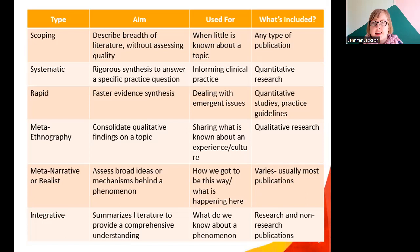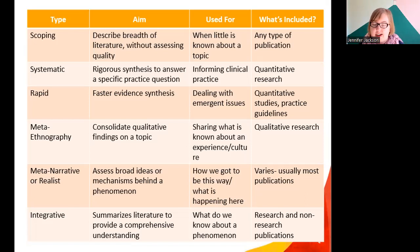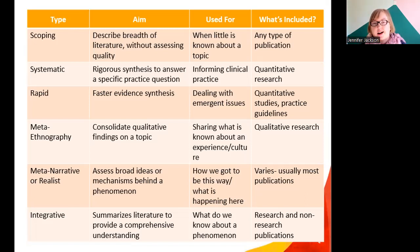Rapid reviews are the younger cousin of a systematic review, and the aim is to deal with emerging clinical issues and get some information quickly. You don't go to the same exhaustive lengths as a systematic review — you go a little shorter and look for the main findings. There would have been many of these done in the early days of COVID-19, which is a perfect example of an emergent need where you need to respond in six weeks rather than a year.